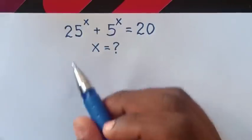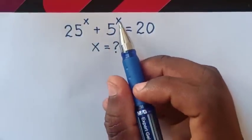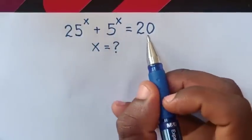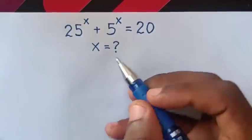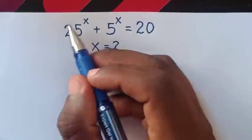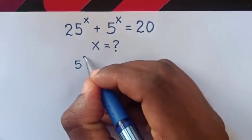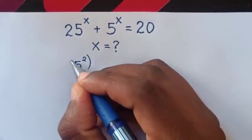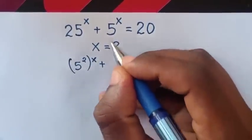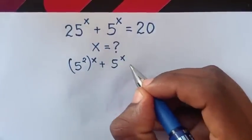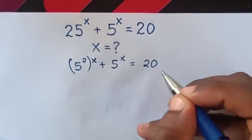Hello, how to solve 25 power x plus 5 power x is equal to 20, to find the value of x. So first, 25 is 5 squared, so we write it as 5 squared bracket power x plus 5 power x is equal to 20.